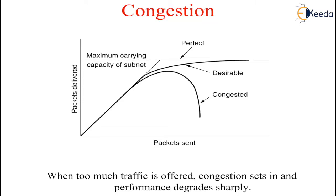The difference between Congestion Control and Flow Control is that Congestion Control has to do with making sure the subnet is able to carry the offered traffic. It is a global issue, involving the behavior of all the ports, all the routers, store and forwarding, processing within the routers, and all other factors that tend to diminish the carrying capacity of the subnet.